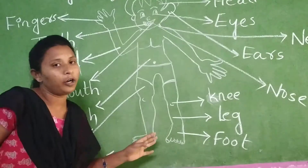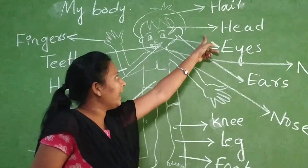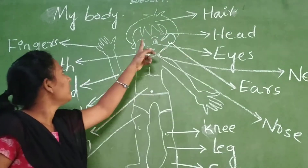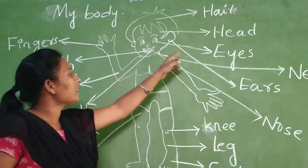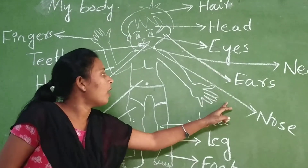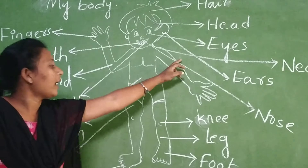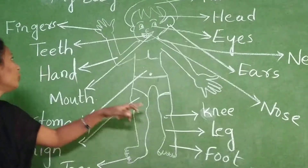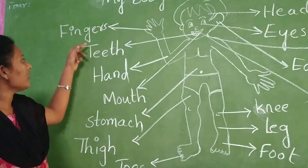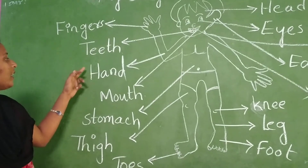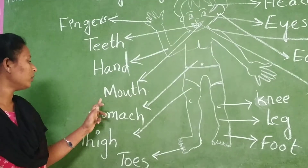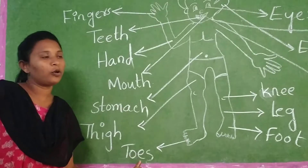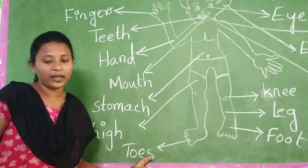Now let's review again. Head, ears, nose, mouth, neck, knee, leg, foot, fingers, teeth, hand, stomach, thigh, toes.